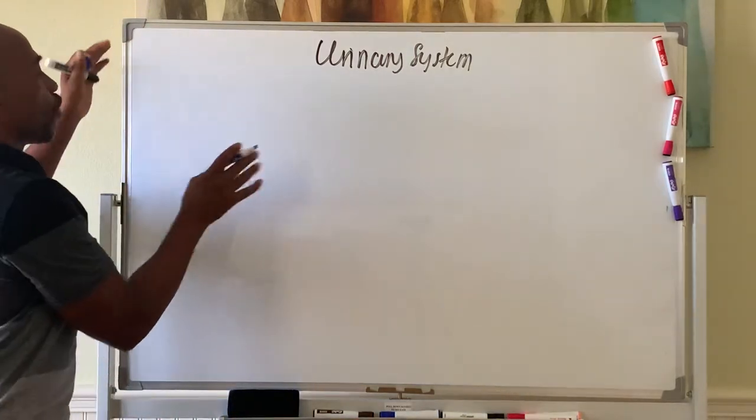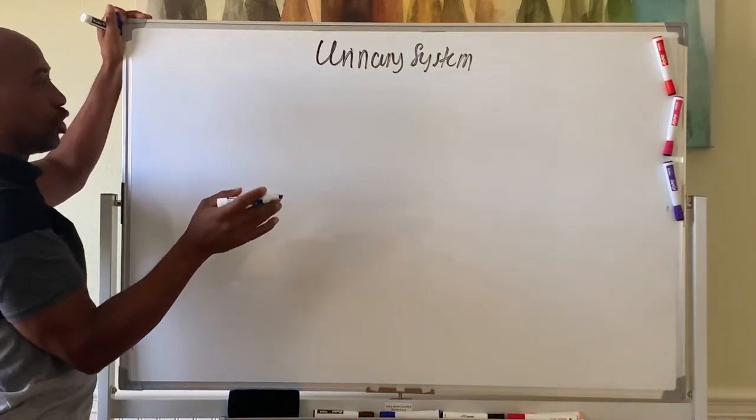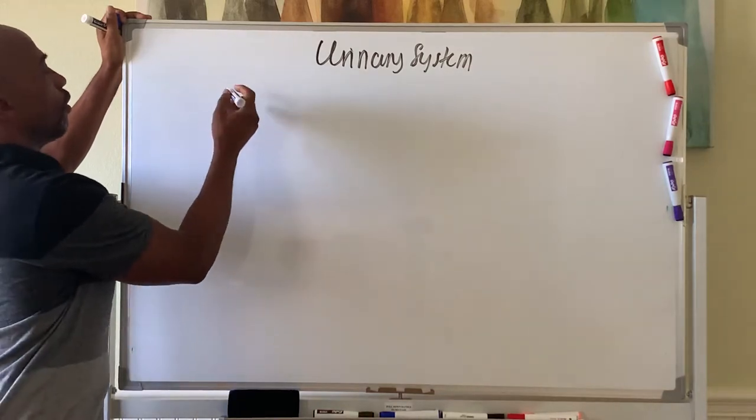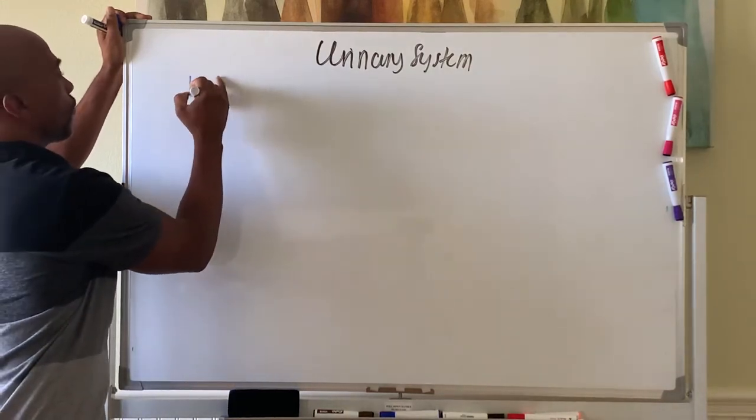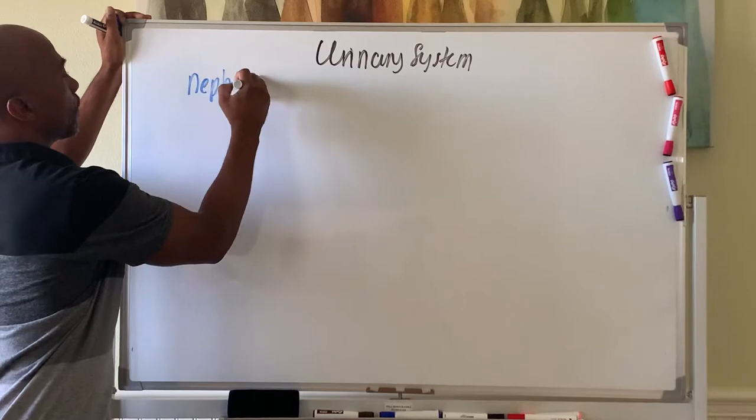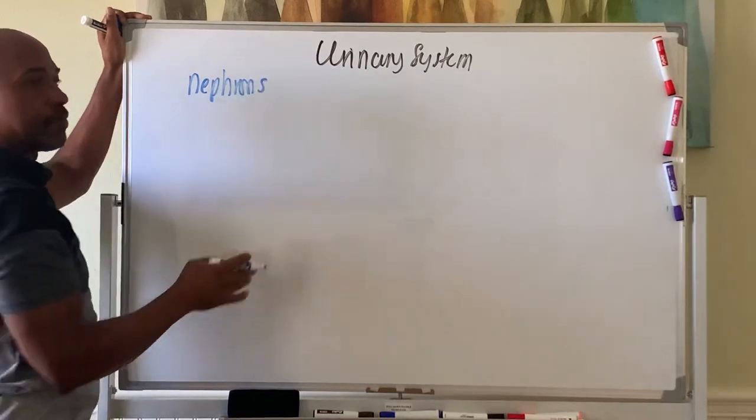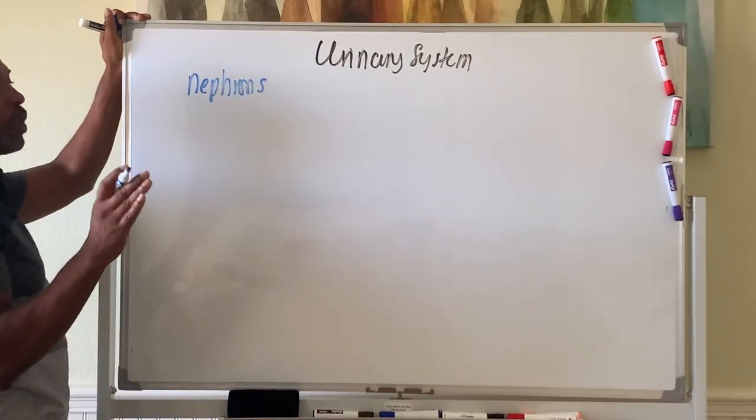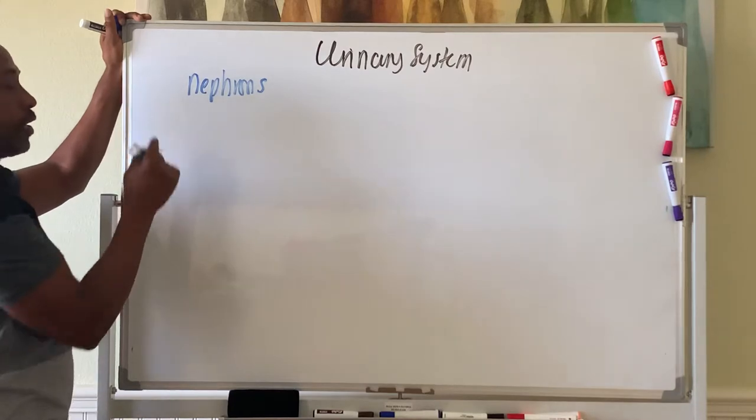We're going to look at four processes that the kidneys do. So let's first draw for you the nephron. The nephrons of the kidneys do the work. The four things that we'll discuss today will occur in the nephrons.